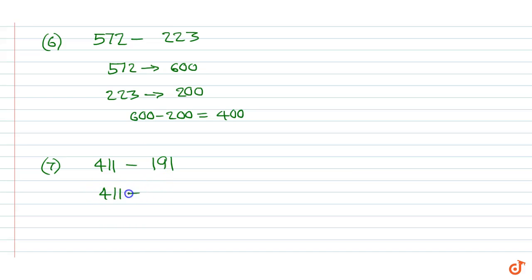Example 7: 411 minus 191. 411 rounds up to 400, 191 rounds up to 200. So 400 minus 200 is equal to 200.